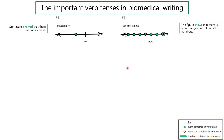The second most common verb tense is called present simple. This is something that happens before now, and now, and in the future. Here's our example: 'The figure shows that there is little change in absolute cell numbers.' In daily life, I might say, 'I eat breakfast around 7 o'clock in the morning.' It's just a typical thing — water boils at 100 degrees.